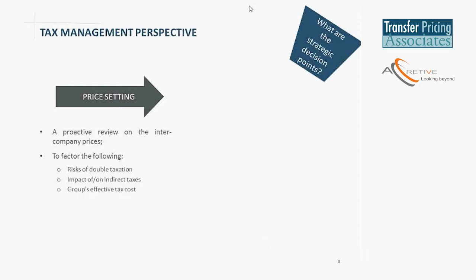The other important aspect while setting prices is the impact on indirect taxes. In the Indian context, this would comprise value-added taxes and service tax, and even customs duty in case of import transactions. There are certain scenarios where even import transactions, though not covered by international transfer pricing, could be covered in the domestic regulations. The impact on indirect tax would arise because these tax laws also have valuation methodologies prescribed. Finally, it needs to factor in the group's effective tax cost — whether tactically you would like to construe a price which would reduce the effective tax cost of the group and yet be compliant with the arm's length principle.